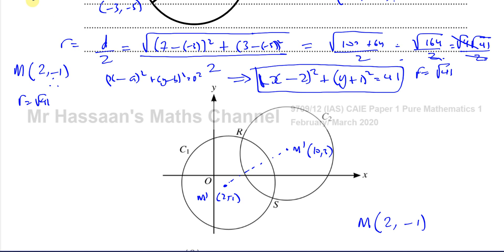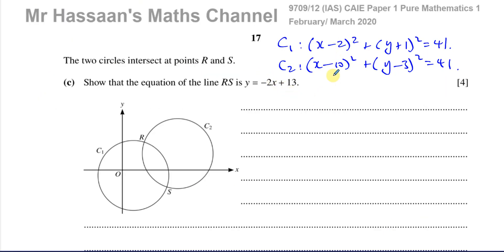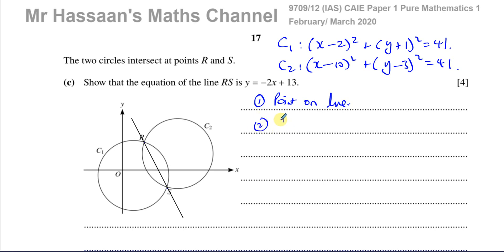Now for part C. The two circles intersect at points R and S. We need to show that the equation of line RS is y equals minus 2x plus 13. To find the equation of a straight line, we need a point on the line and the gradient. We know the centers of both circles: C1 has center 2, negative 1 and C2 has center 10, 3.